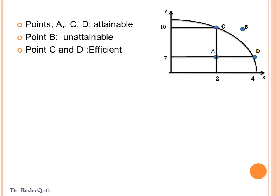How can this economy reach point B? The economy can increase its ability to produce more goods — more X and more Y — and reach point B by three ways: by increasing the amount of resources, by adopting higher technology, and by achieving a higher economic growth rate. In this case, the production possibility curve will shift upward and reach point B, and point B would become attainable.